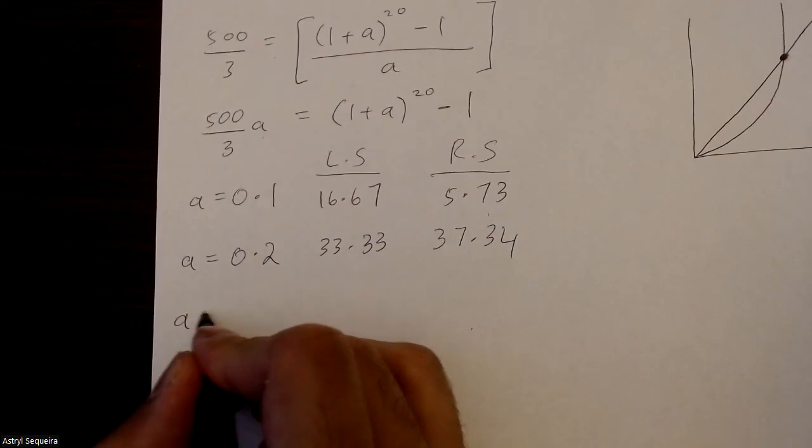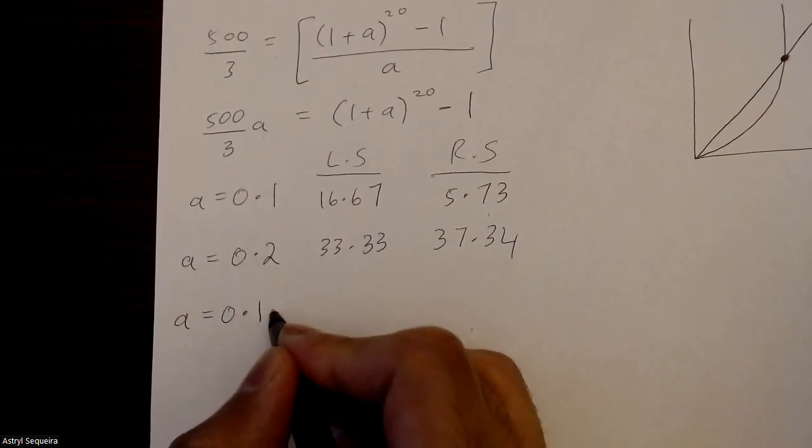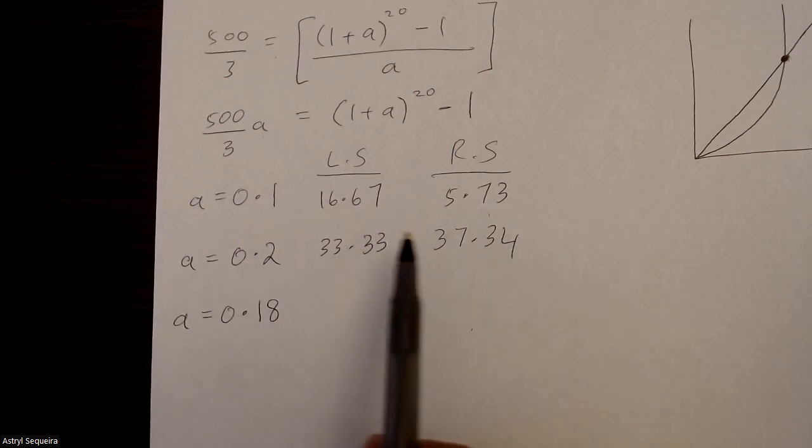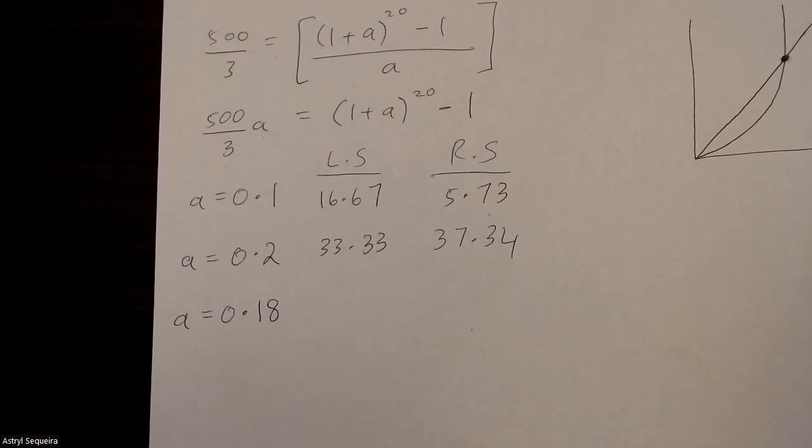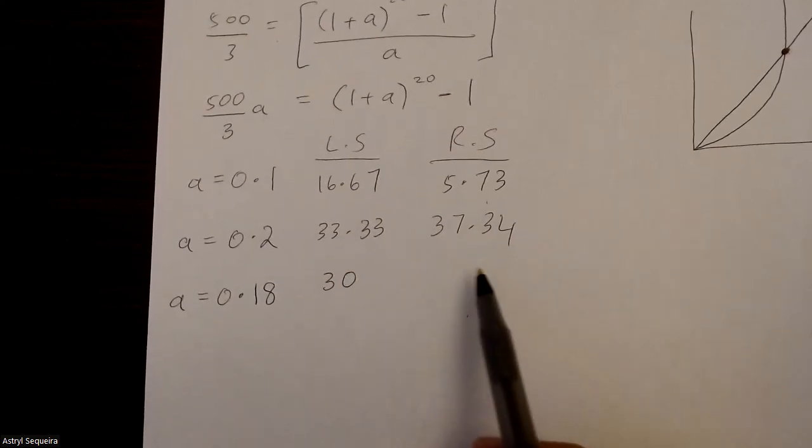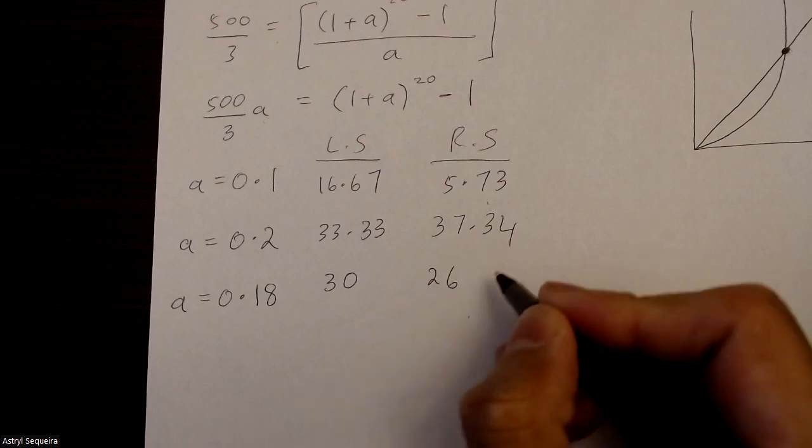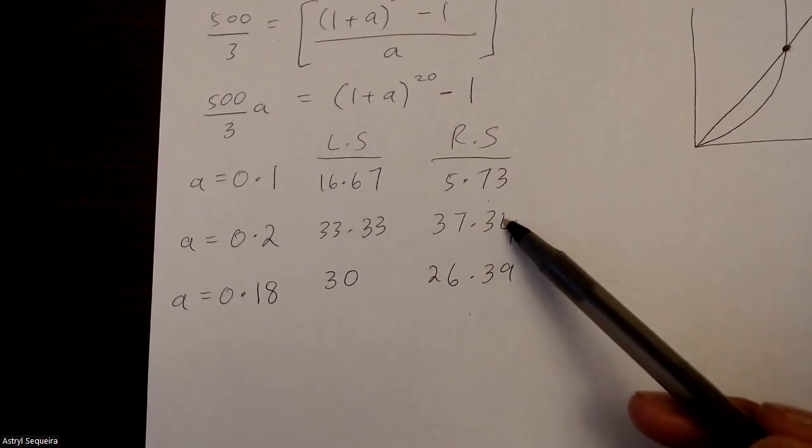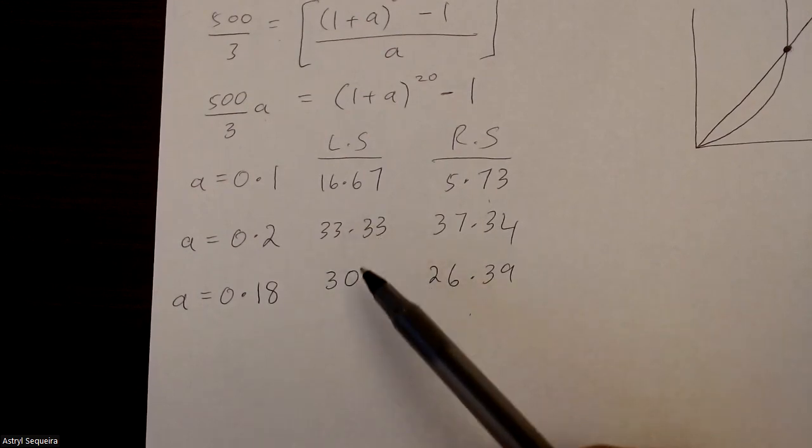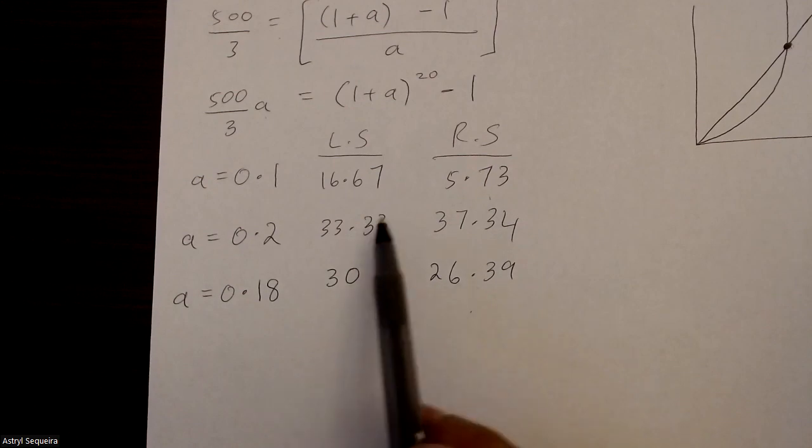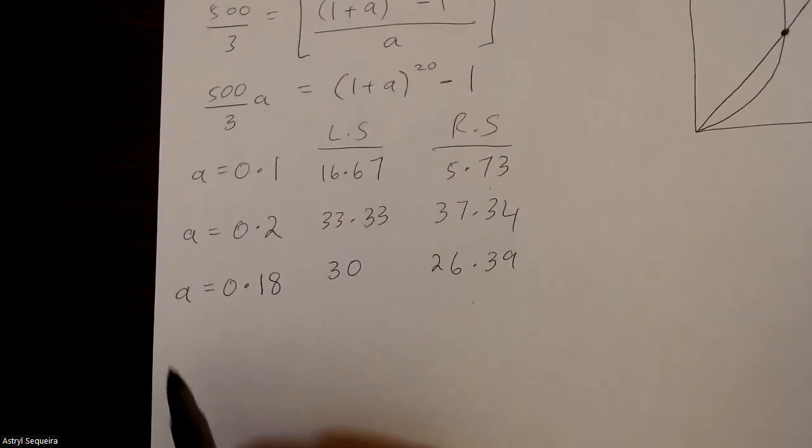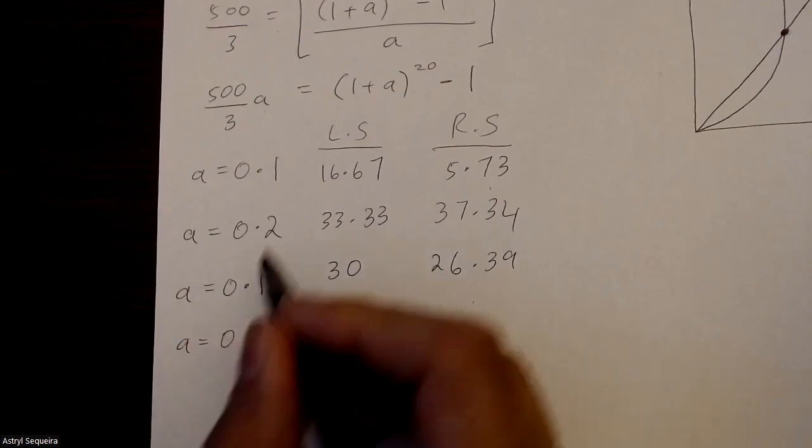So let me try a as 0.18. I get 30, sub that in the first equation. And I get exactly 30. And let's sub it in this equation over here. I get 26.39. So now I've noticed this value has gone too low. This value has gone a bit lower. The difference here is almost the same as the difference here, but now this number is smaller than this one. So most probably the right solution is between these two.